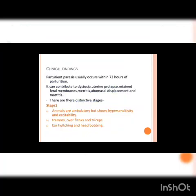Clinical findings: parturient paresis occurs within 72 hours of parturition. It can contribute to dystocia, uterine prolapse, retained fetal membranes, metritis, abomasal displacement, and mastitis. There are three distinctive stages of parturient paresis.